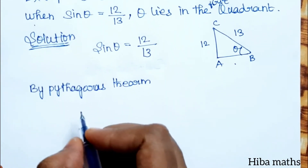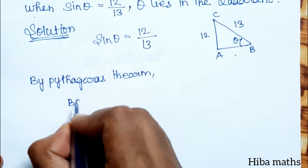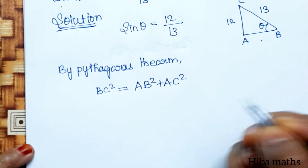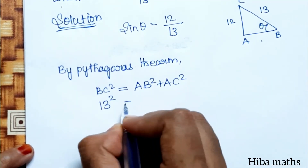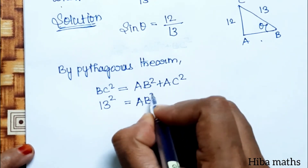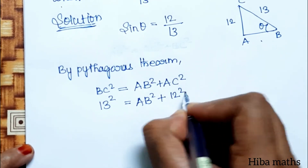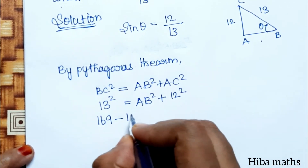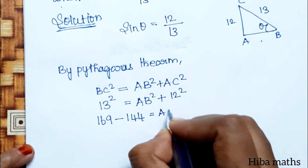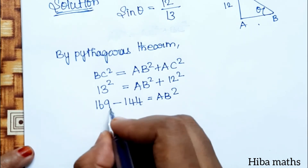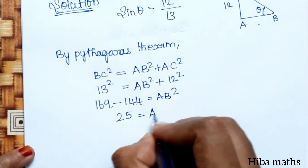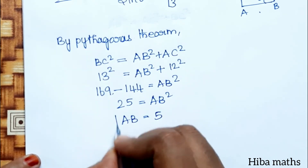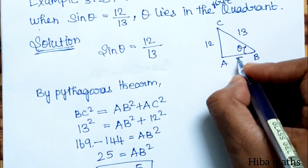The hypotenuse is BC. So BC² = AB² + AC². That gives 13² = AB² + 12², meaning 169 = AB² + 144. Therefore AB² = 169 − 144 = 25, and AB = 5.